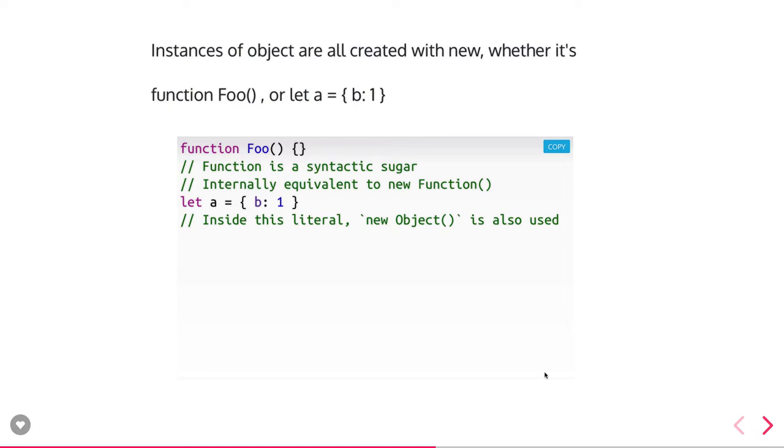All instances of objects are created with new. You can also create an object directly with object literal - you don't need to use the new keyword. You can also use new Object. Whenever you're doing this expression, new Object is being done internally and it gives you a brand new object.